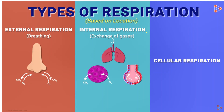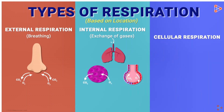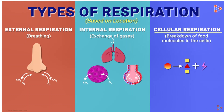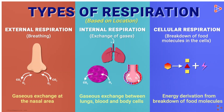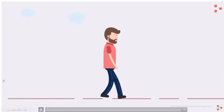Cellular respiration is the process in which oxygen is used to break down food molecules by the cells. Internal and cellular respiration are often confused, but the difference is clear: external respiration is gaseous exchange at the nasal area; internal respiration is gaseous exchange between the lungs, blood, and cells; while cellular respiration is restricted to the cells only. Today we have covered respiration and its types.